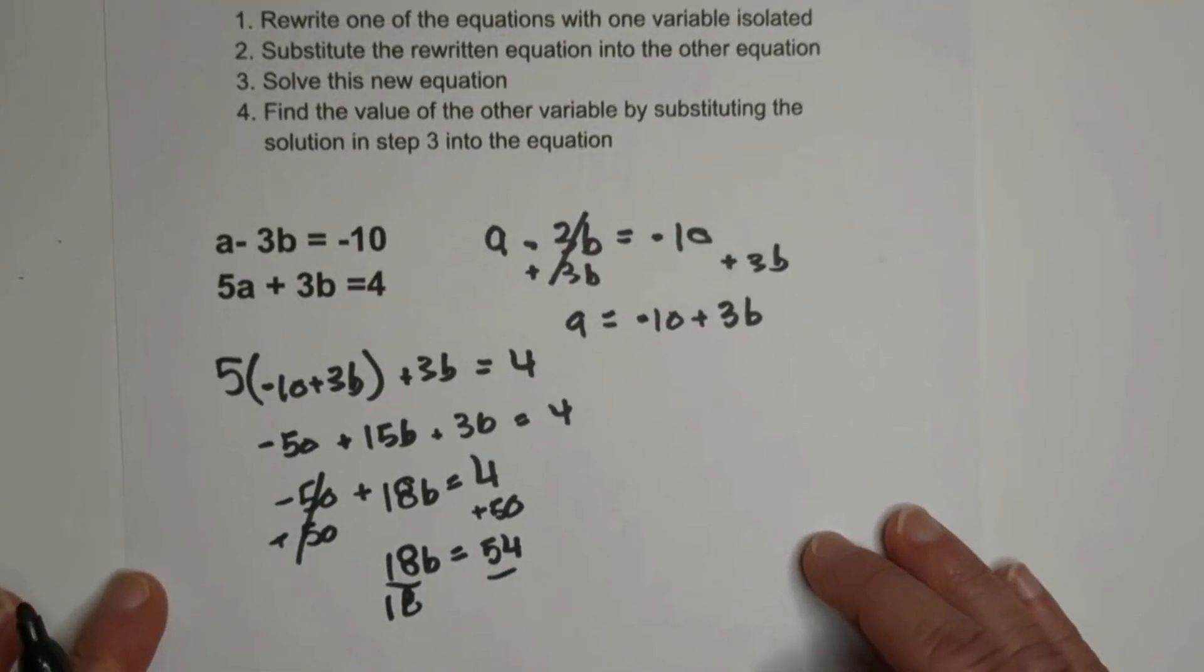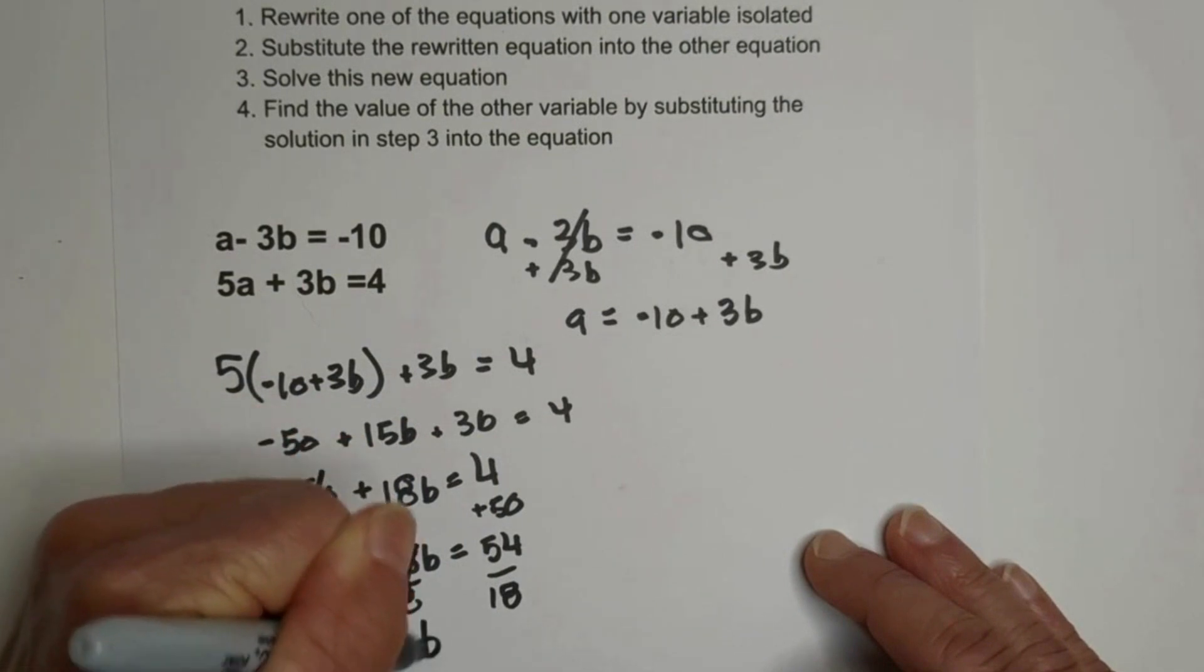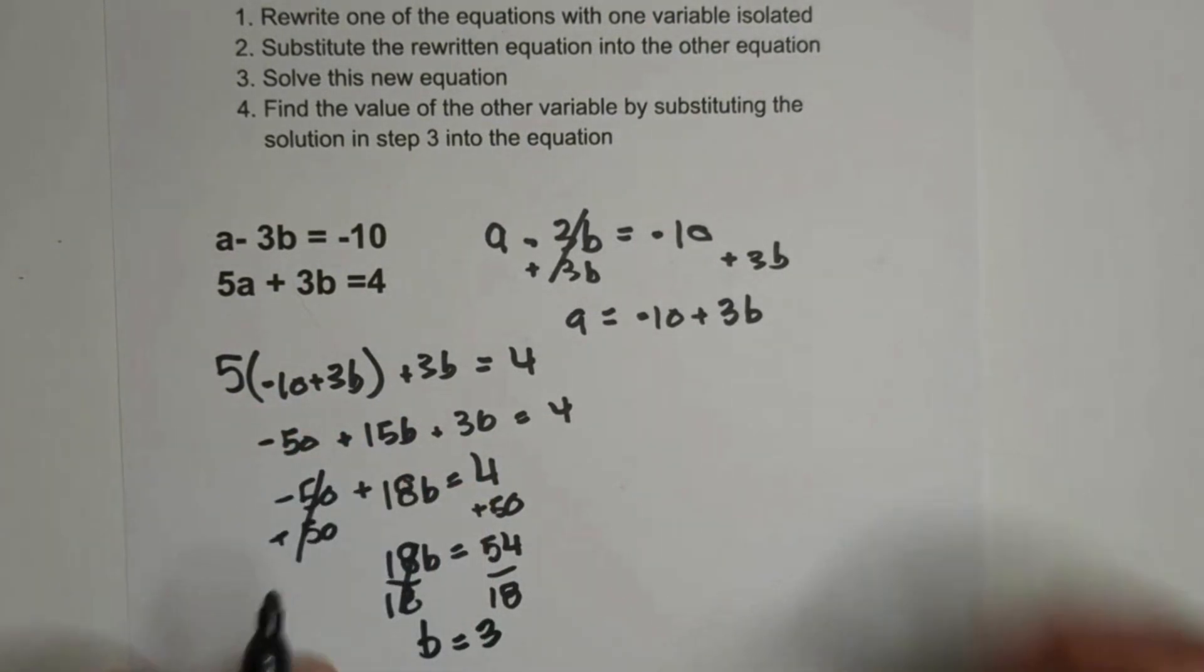So that gives me these cancel. So bring down the 18B equals 54 and then divide through by 18. These cancel. B equals 3.